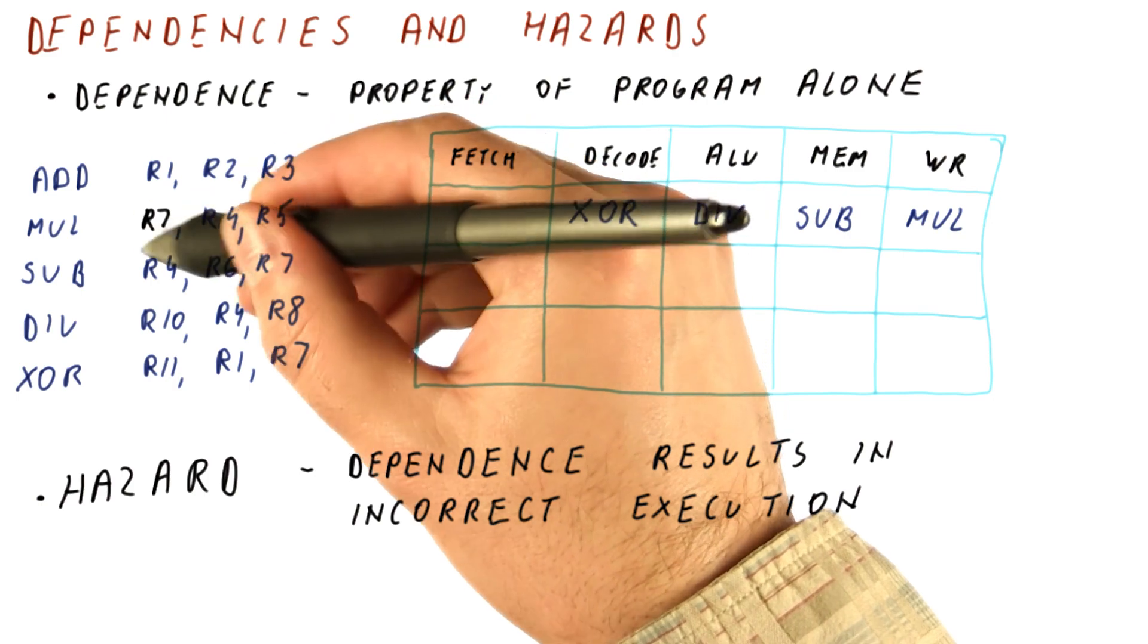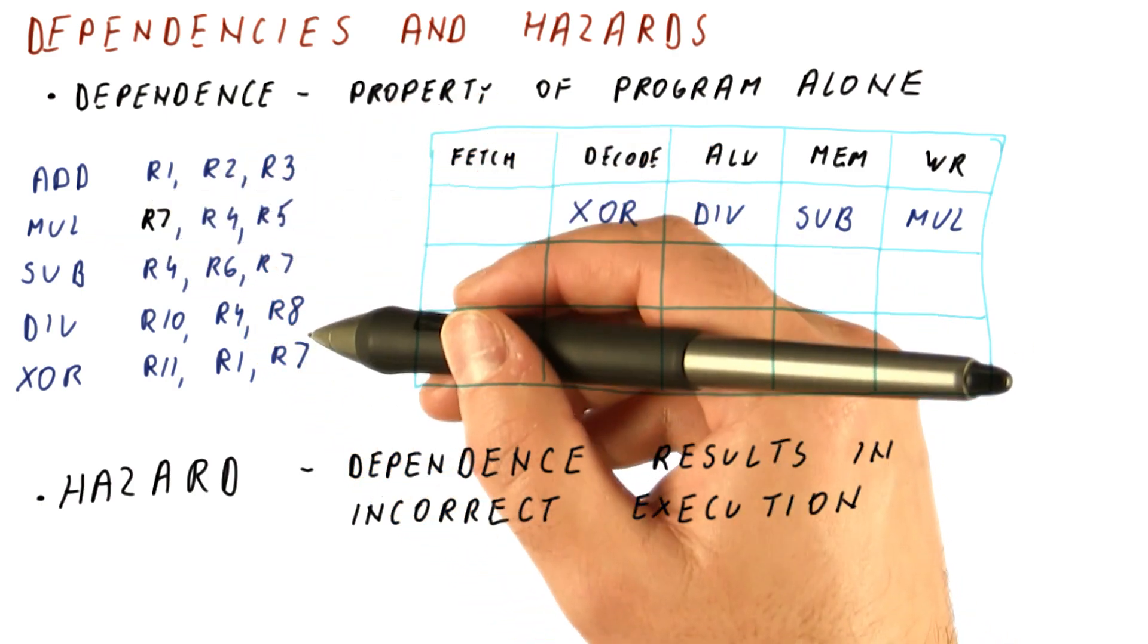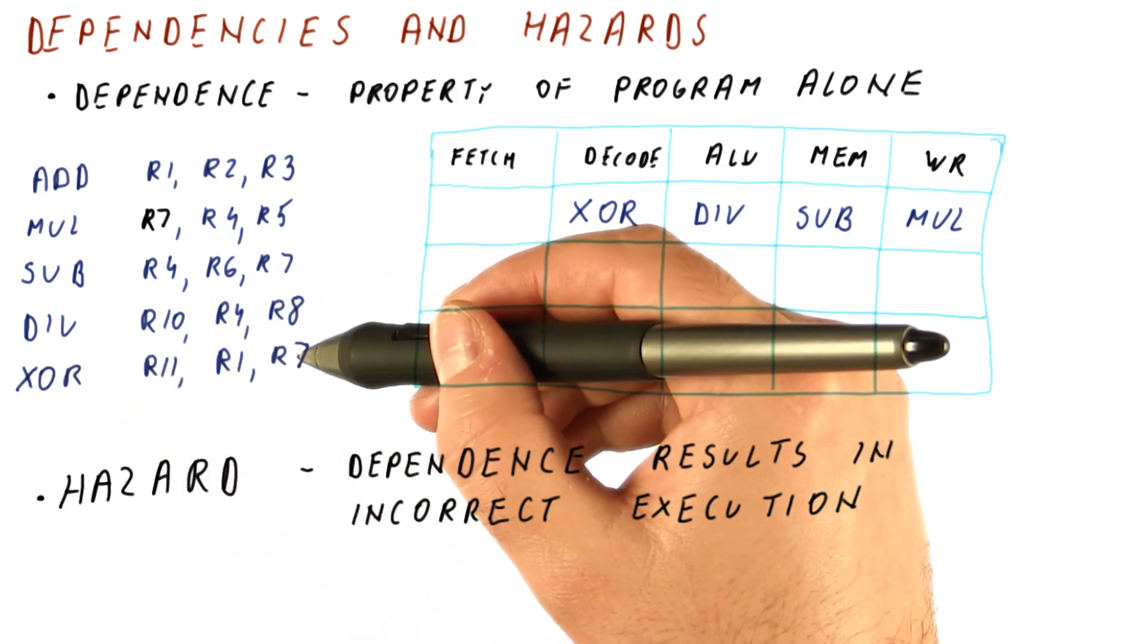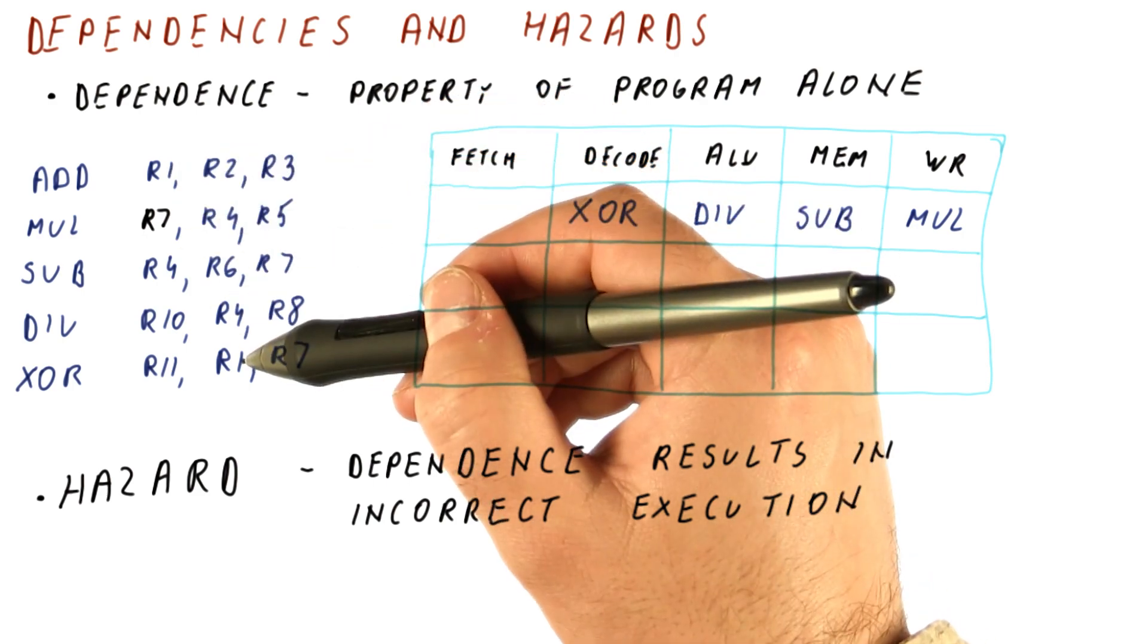Let's say that the write to R7 occurs in this multiply instruction, and that we now have an XOR that uses R1 and R7. Let's now see whether there is a dependence between the add and XOR.